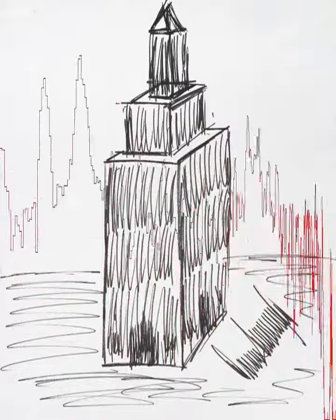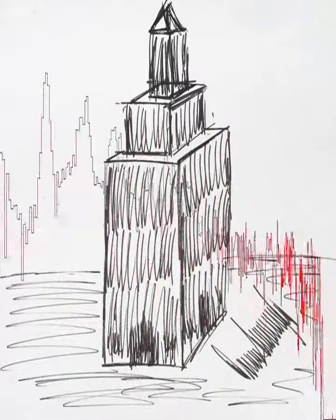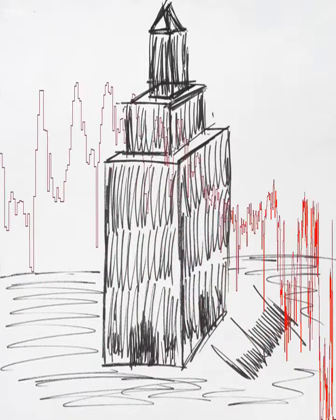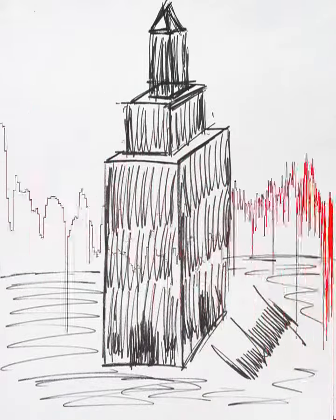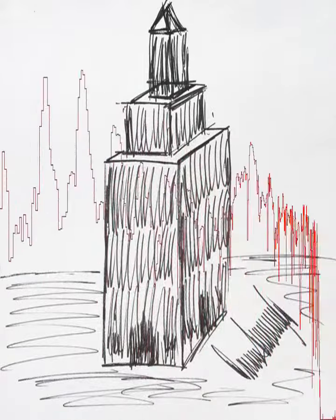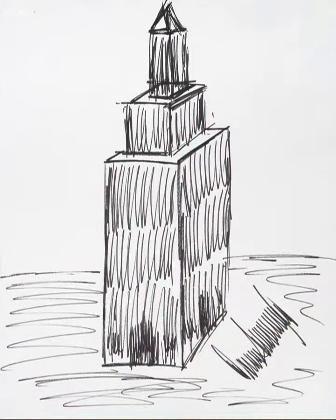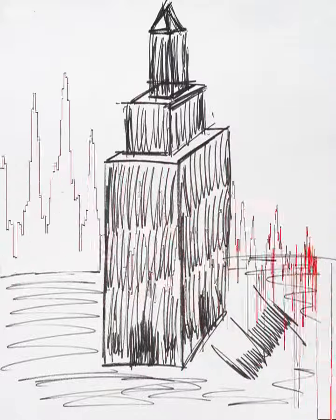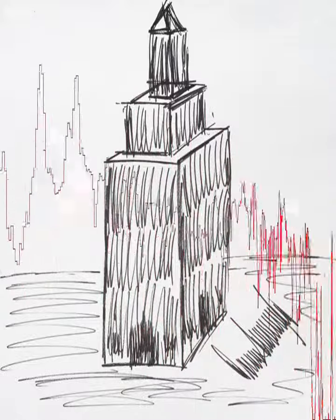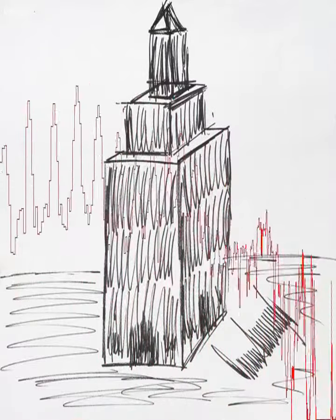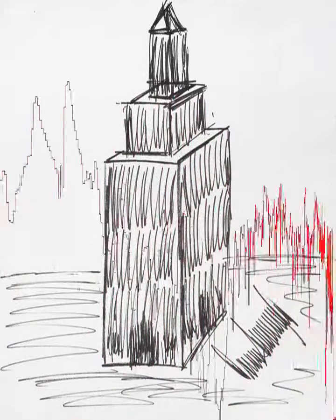A sketch of the Empire State Building drawn by President Donald Trump has sold at auction for $16,000. Julian's Auctions says the 12-inch by 9-inch black marker depiction of the iconic New York City skyscraper was created by Trump for a charity auction in Florida during the time he opened his Mar-a-Lago estate as a private club in 1995.